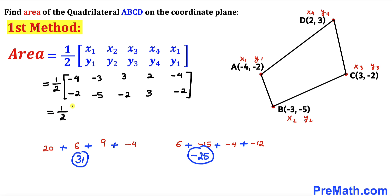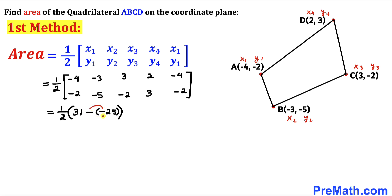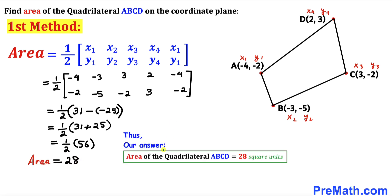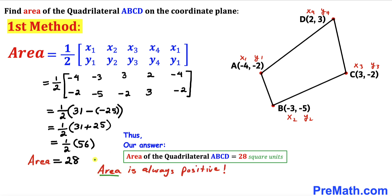So the area of quadrilateral ABCD is 1/2 times (31 minus (-25)). The two negatives make a positive, so this becomes 1/2 times (31 + 25) = 1/2 times 56 = 28 square units. Note: if the result had been negative 28, we take the absolute value since area is always positive.